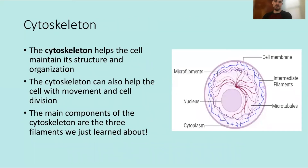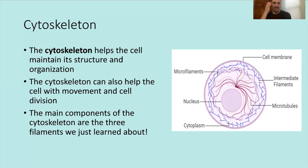The cytoskeleton helps maintain cell structure and organization. It lines the inside of the cell membrane, giving the cell its shape. The cytoskeleton can also help the cell with movement and cell division depending on the cell type, and the three main components are the microtubules, microfilaments, and intermediate filaments we just covered.